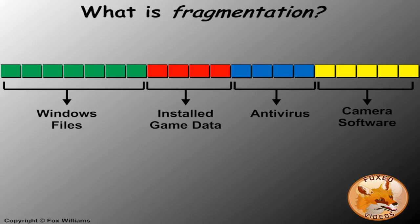The best way to explain that is to show you a couple diagrams. First, what I want to show you is four programs that are installed on your computer. You'll see Windows files — this isn't realistic to the actual size of the files, but each of those colored blocks represents data. The green data belongs to Windows, the red belongs to a game that you installed, the blue belongs to an antivirus program, and the yellow belongs to camera software.